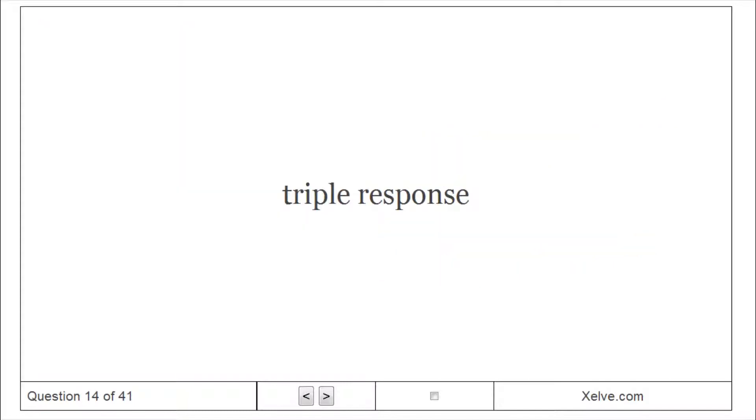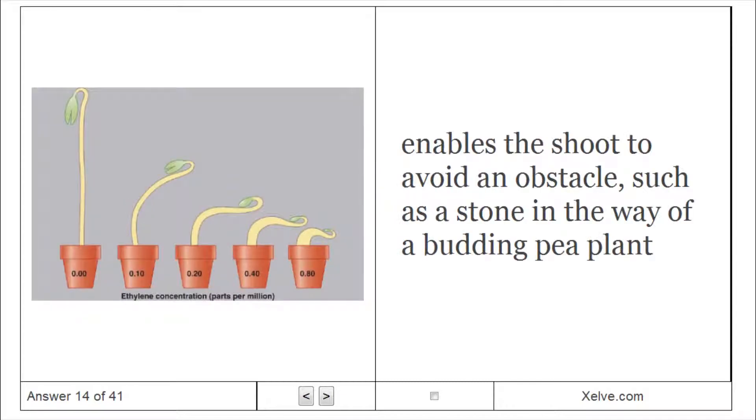Triple response: enables the shoot to avoid an obstacle, such as a stone in the way of a budding pea plant.